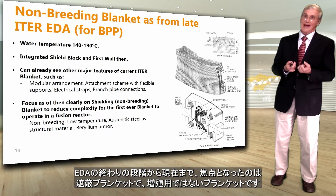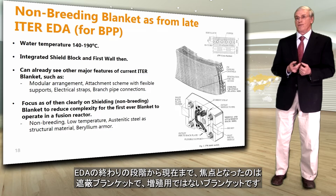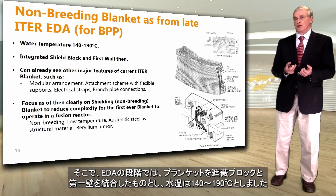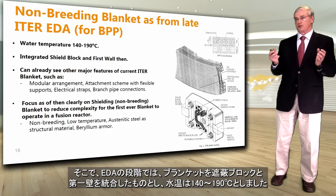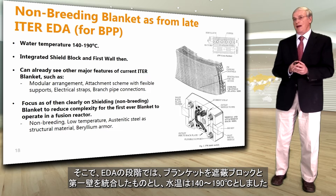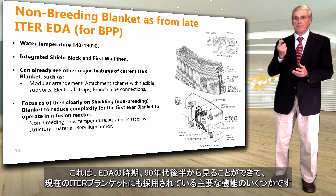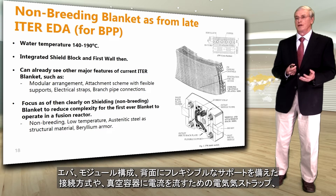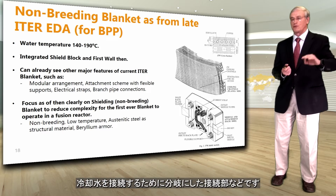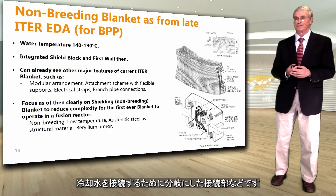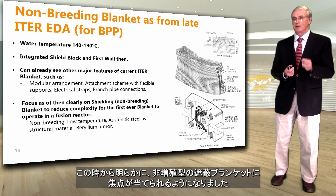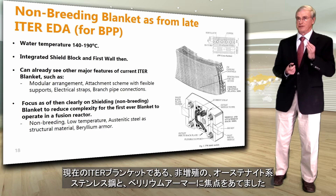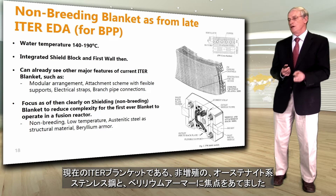From the late EDA phase through to now, the focus has been on a shielding blanket, which is a non-breeding blanket. During the EDA the blanket was viewed as an integrated shield block and first wall, with water temperature at 140 to 190°C. From this time you could already see major features still used in the current ITER blanket, such as the modular arrangement, the attachment scheme with flexible supports at the back, electrical straps to conduct current to the vacuum vessel, and branch pipe connections for water cooling. The focus became clearly a non-breeding, low-temperature, austenitic steel structural material with beryllium armor — which is now the ITER blanket.